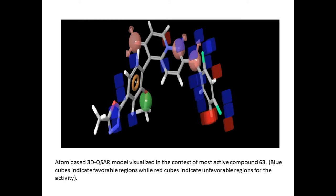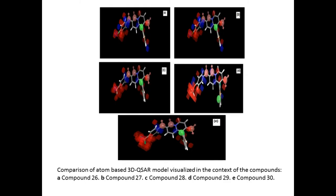This figure shows the atom-based 3D QSAR model visualized for the most active compound 63. The blue cubes indicate the favorable regions for activity, while the red cubes indicate the unfavorable regions for activity. This figure shows the comparison of the atom-based 3D QSAR model visualized for compounds 26, 27, 28, 29, and 30, helping to distinguish active and inactive compounds. Again, blue cubes indicate favorable regions and red cubes indicate unfavorable regions for activity.